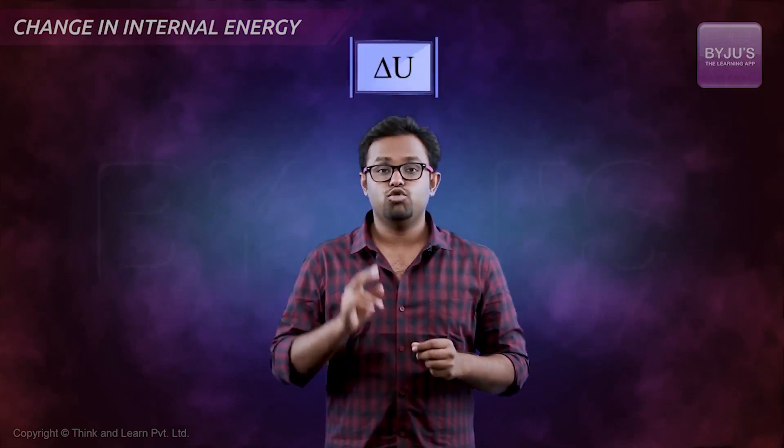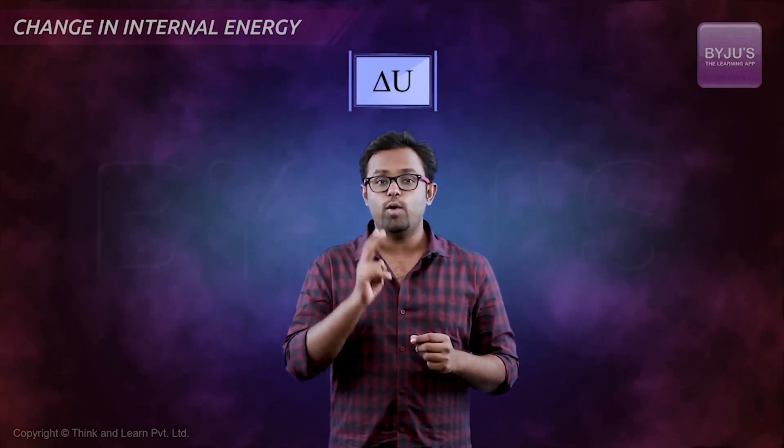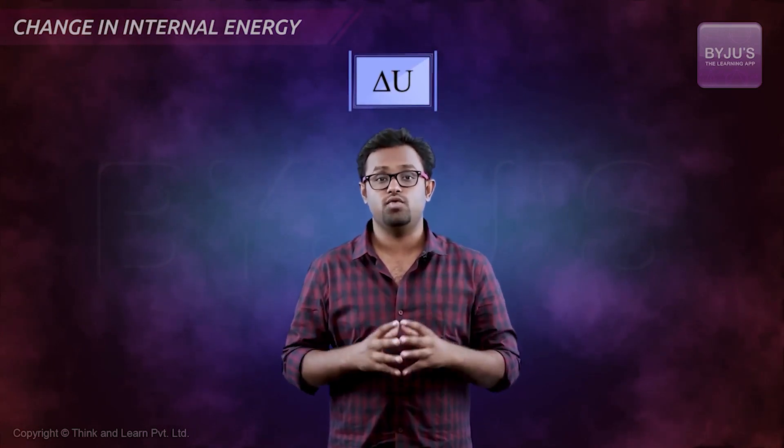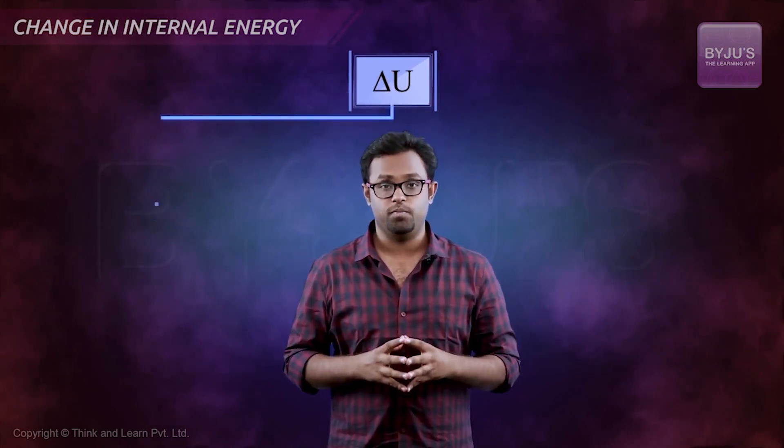Delta U would change only when there is an energy exchange with the system — when energy is given to the system or taken out of the system by any method. So there are these two ways in which we can do this energy transfer: heat and work.